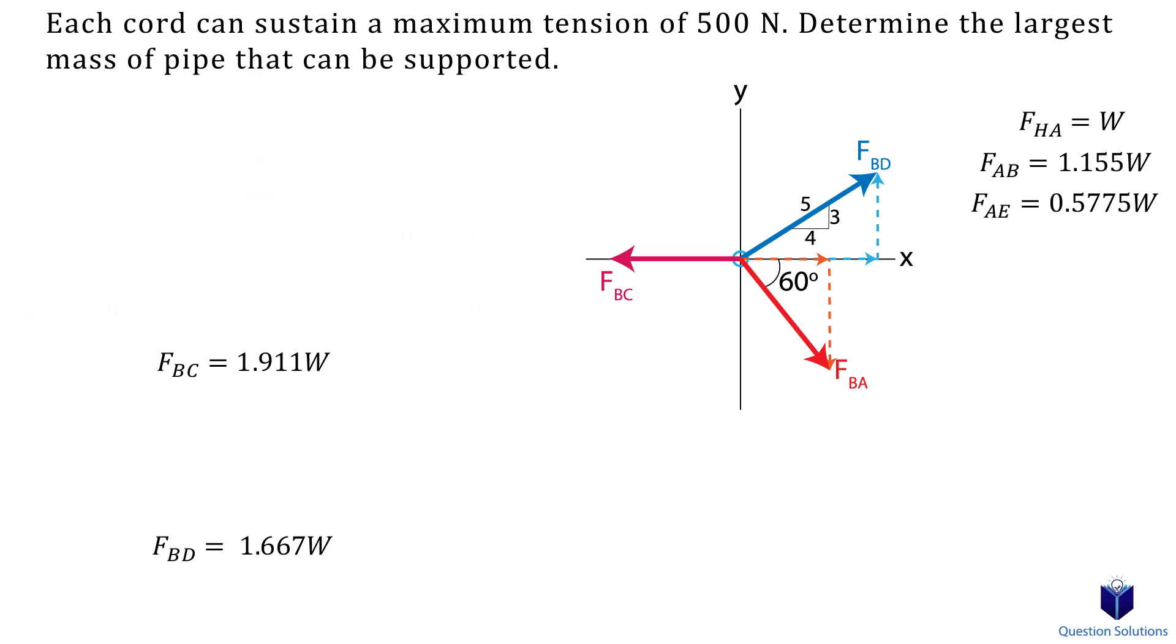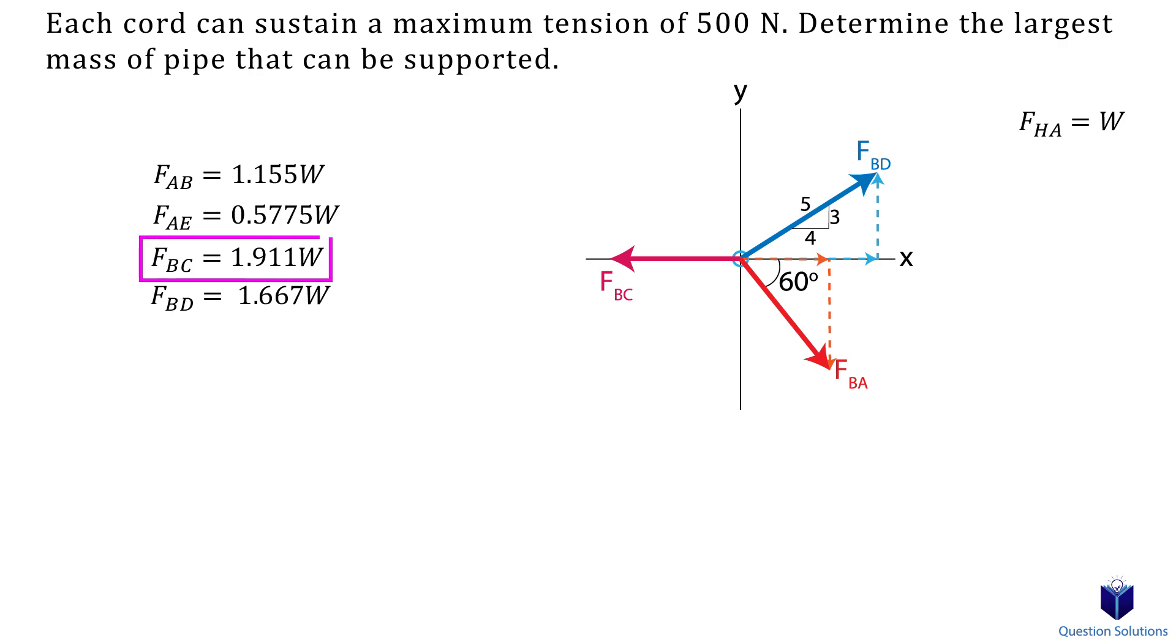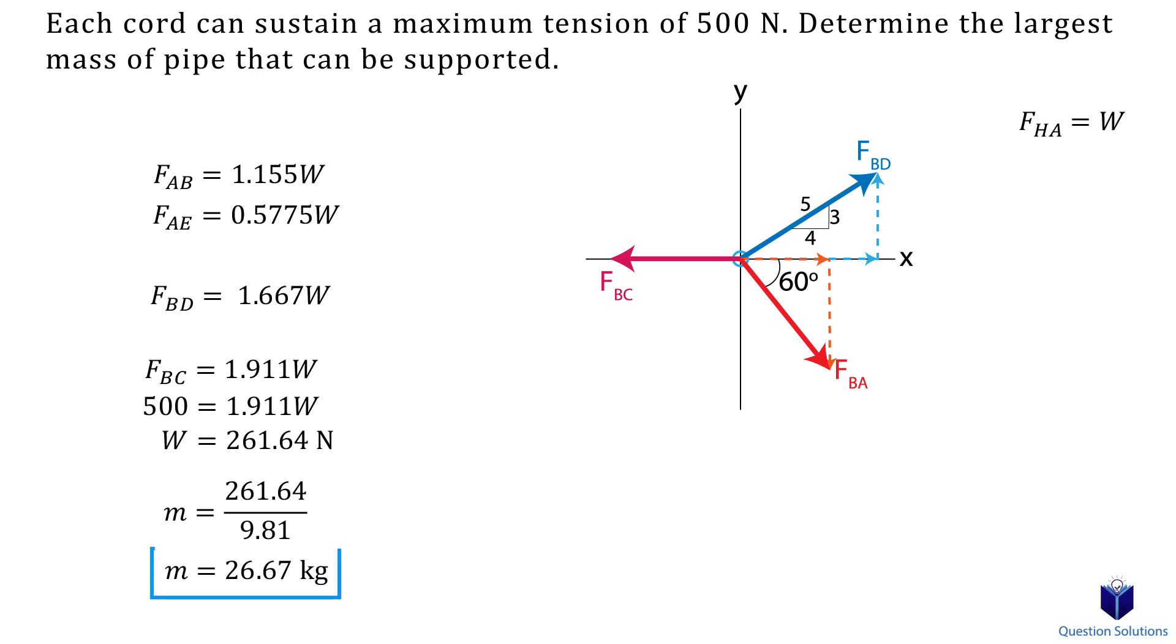So the reason why we wrote every force in terms of weight is to compare which cable would carry the largest force. If we look at the four values we have, we see that force BC would have the largest tension since it's the biggest number. So all we have to do is figure out what weight would cause force BD to equal 500 newtons. Let's solve for the weight. Now if we divide the weight by the acceleration due to gravity, we get the mass. So the maximum mass of the pipe that can be supported is 26.67 kg.